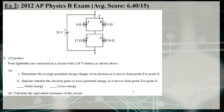Now let's look at an actual AP exam question from 2012. Four light bulbs are connected in a circuit with a 24-volt battery. I'll label the battery V₀ and the resistors RA, RB, RC, and RD.